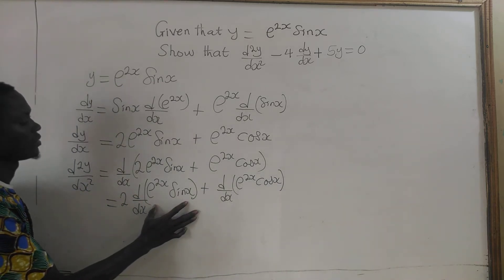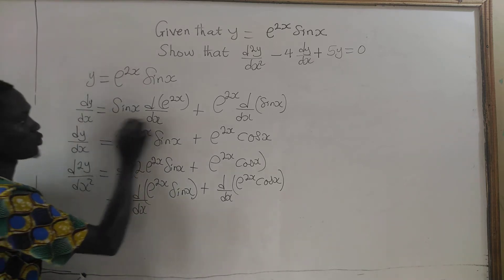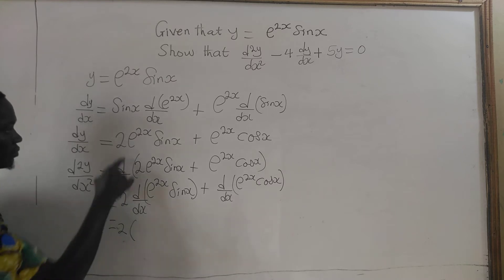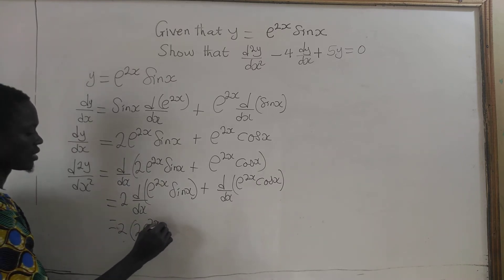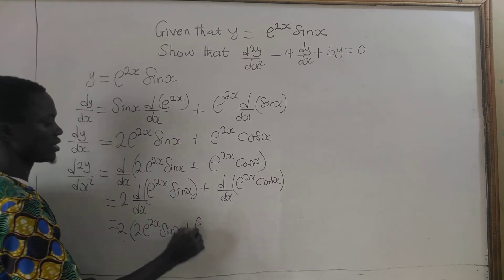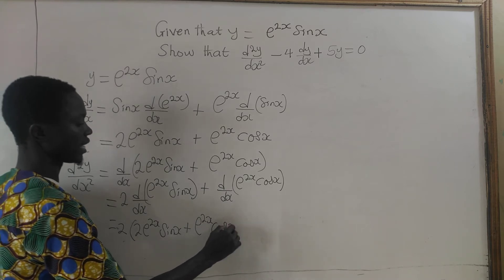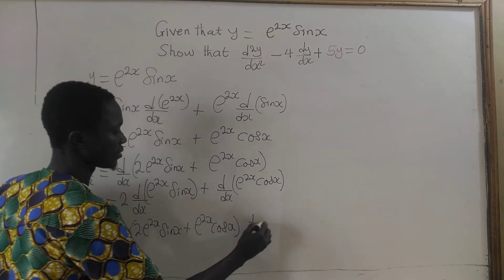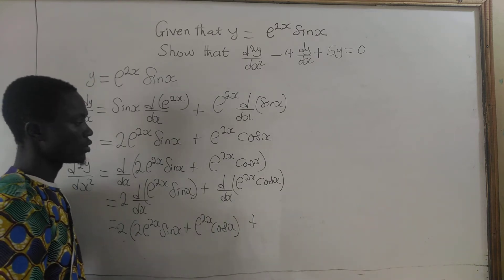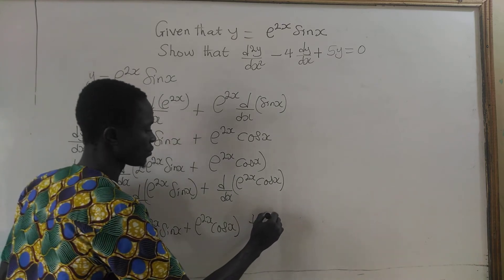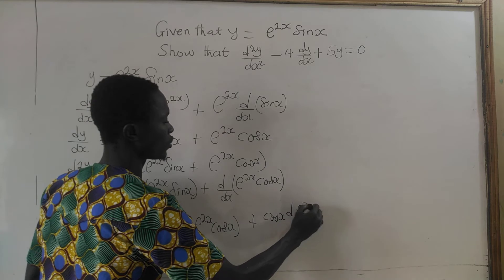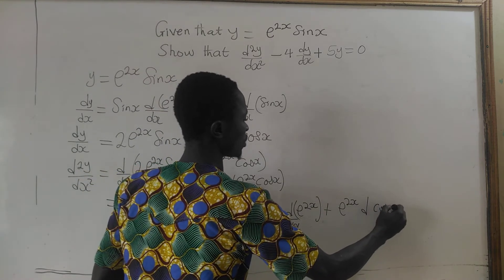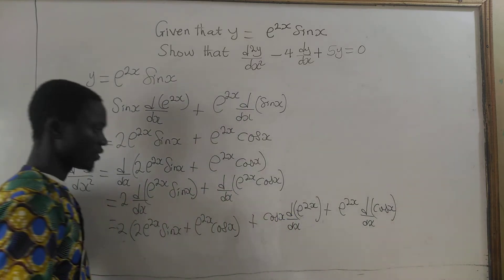Now, the derivative of e^(2x)·sin(x) is the original expression — we have already done that one. So we substitute that result in. For the second term, we use the product rule: cosine of x times the derivative of e^(2x) with respect to x, plus e^(2x) times the derivative of cosine x with respect to x.